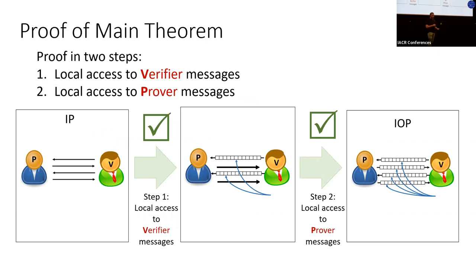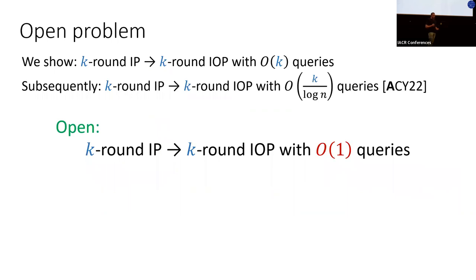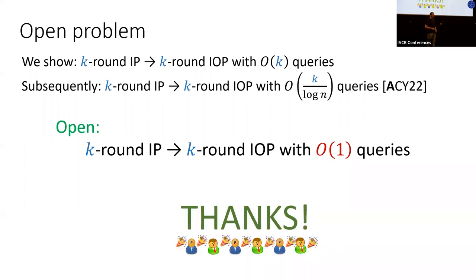To summarize: we transform a k-round IP into a k-round IOP — first getting local access to verifier messages, then adding local access to prover messages. In this work we achieve O(k) queries total; subsequently we lowered this to k/log n queries. It remains open whether one can go from a k-round IP to a k-round IOP with a constant number of queries overall.